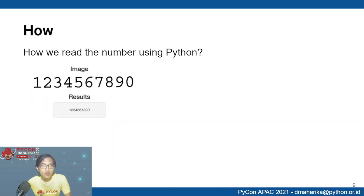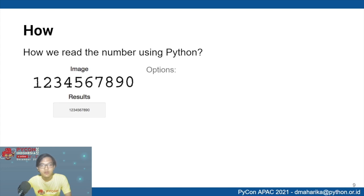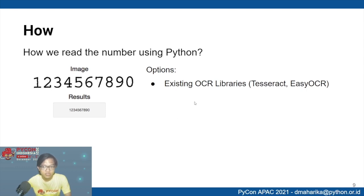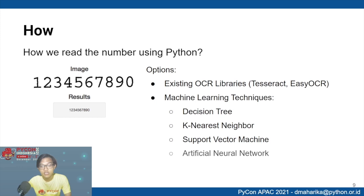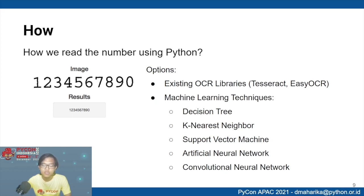We need to know how to read numbers using Python. Imagine an image containing digits 0–9 — we need to convert this into a digital result in JSON, TXT, or another format. There are many options: you can use existing OCR libraries like Tesseract or EasyOCR, which are very powerful, or you can create your own machine learning model using decision trees, k-nearest neighbors, support vector machines, artificial neural networks, or convolutional neural networks.